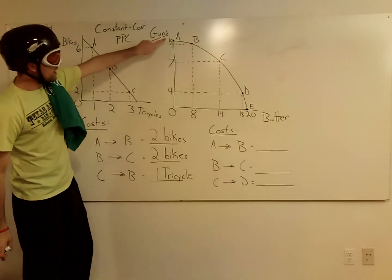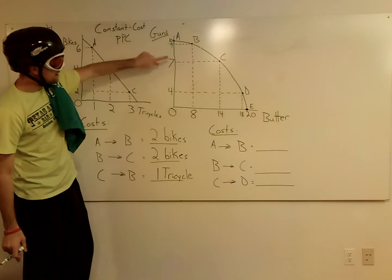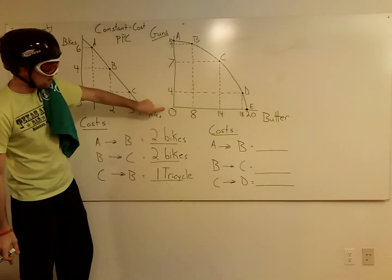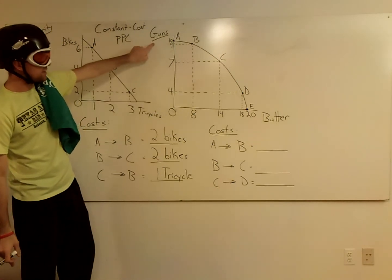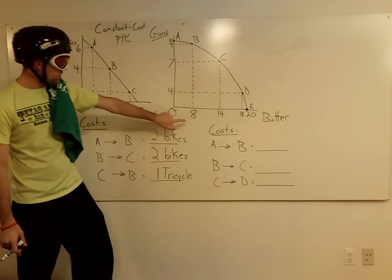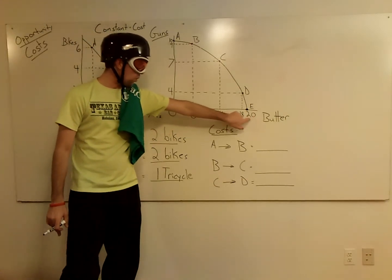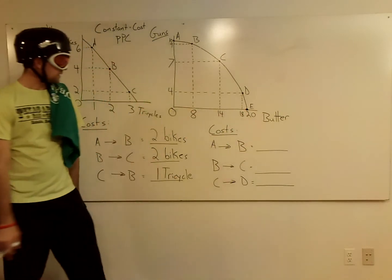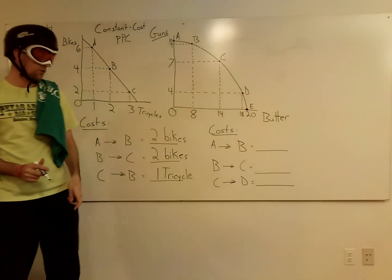We start at 10, we drop to 9, 7, 4, 0, and that's our guns. I know it might be a little bit tricky to see at the top there. And then we go 0, 8, 14, 18, 20 here with our butter.